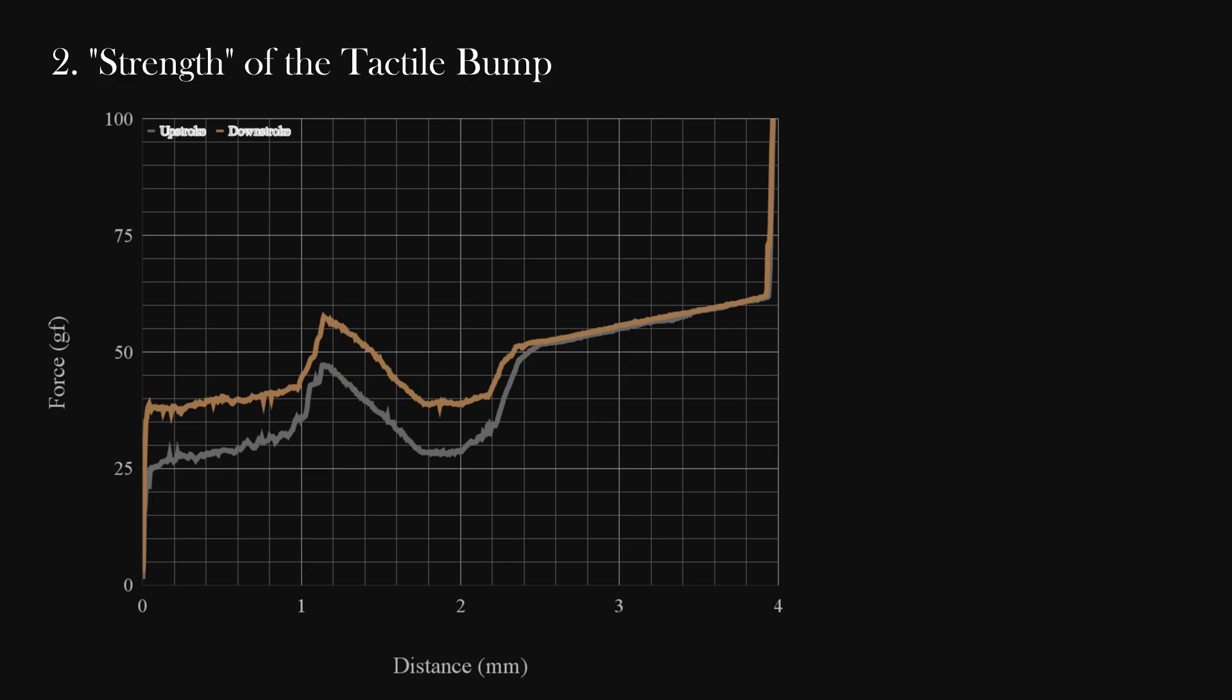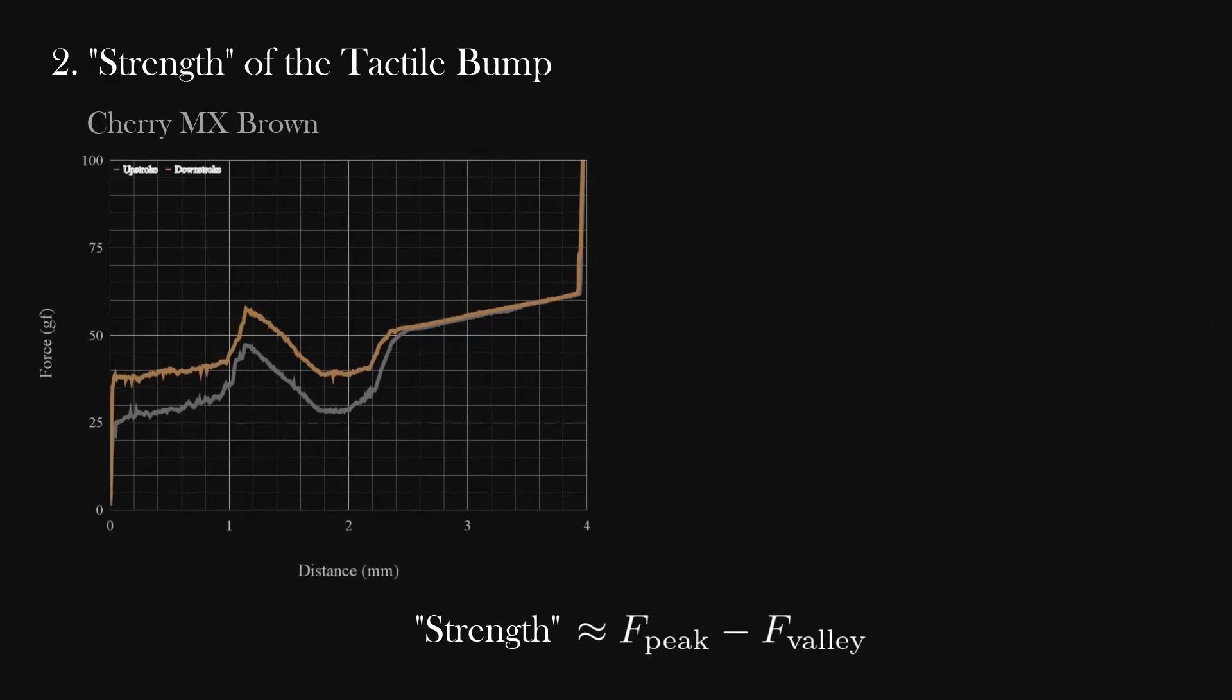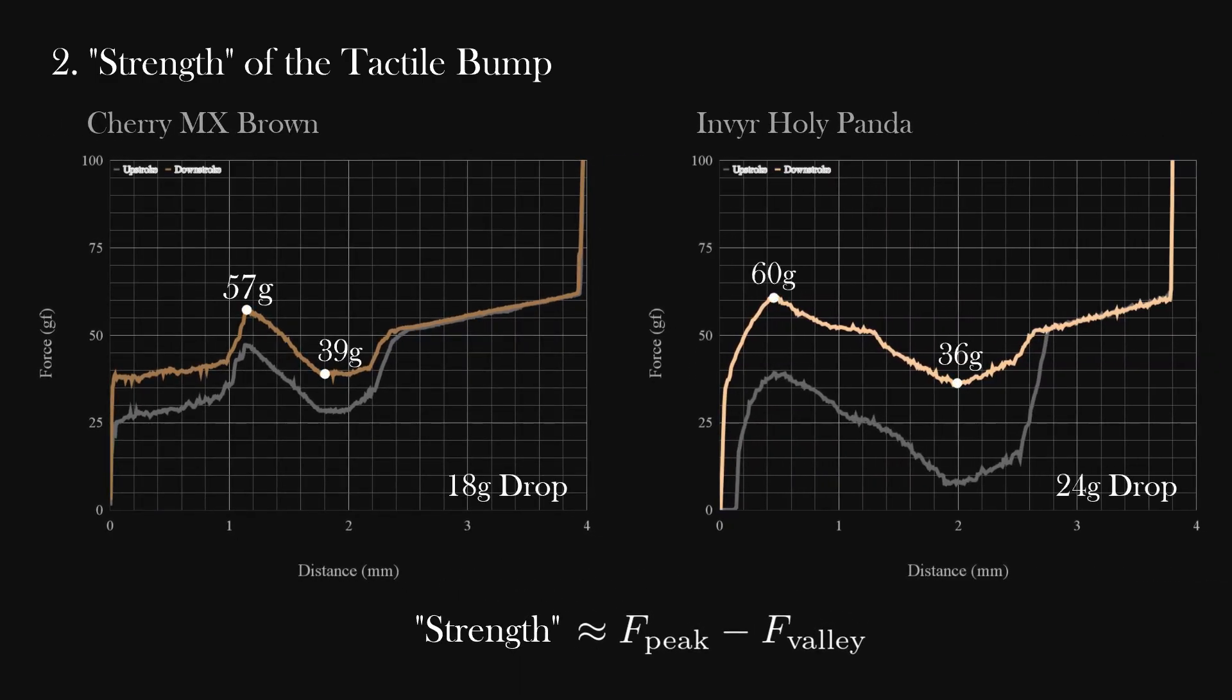Number 2, the strength of the tactile bump. The bump that you feel is entirely characterized by the drop in the force at its peak to the lowest point. The usual way you get the strength of the bump is to just find the difference between the force at those two points. Generally speaking, I think this is a good enough way to quantify the strength of a tactile bump. We can definitely see that Cherry Browns have a weaker tactile event than, say, Holy Pandas.